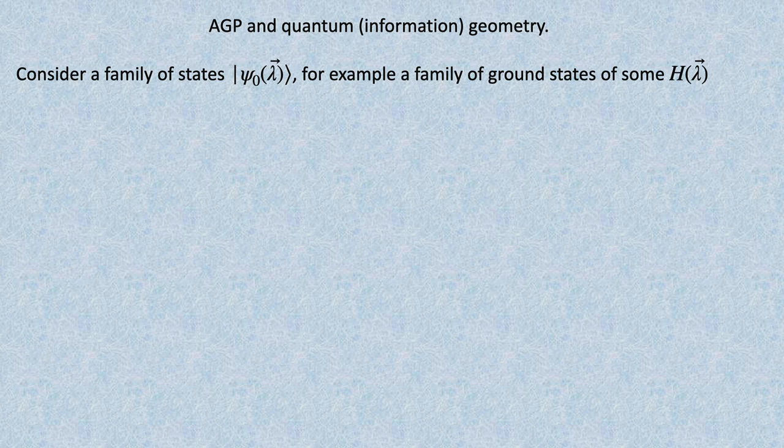I will take a sort of detour and consider a situation where we are interested in one family of states—for example, ground states of some Hamiltonian. I will later go to excited states because ground states usually don't have any chaos.